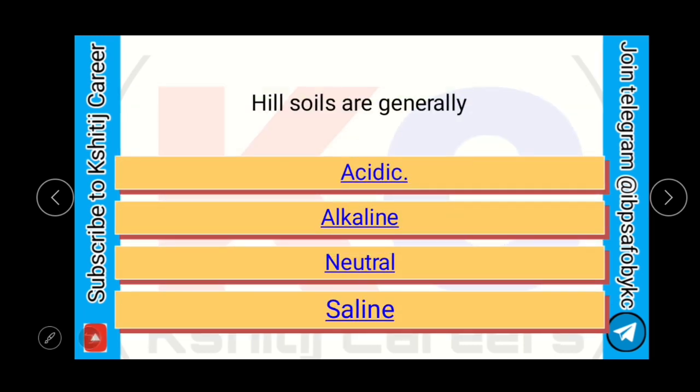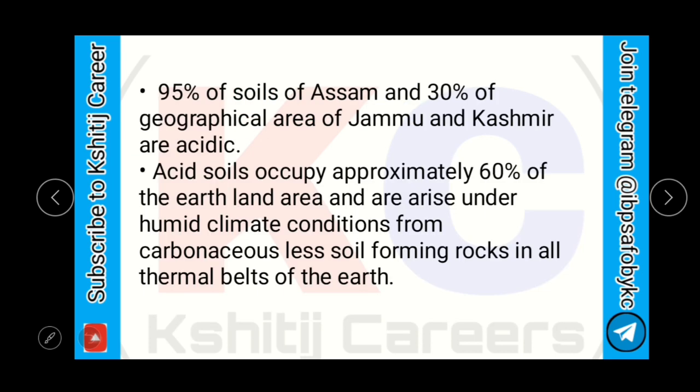Hill soils are generally acidic, alkaline, neutral, or saline? Hill soils are generally acidic. 95% of soils of Assam and 30% of the geographical area of Jammu and Kashmir are acidic. Acid soils occupy approximately 60% of the earth's land and arise under humid climatic conditions from carbonaceous, less soil-forming rocks, in all thermal zones of earth.